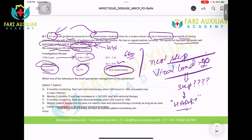The options include: six-monthly monitoring; start antiretroviral therapy when CD4 count is less than 350 and patient has a major infection; monitor three-monthly; start antiretroviral therapy when CD4 is less than 350; or start antiretroviral therapy as soon as possible. The answer is: start antiretroviral therapy as soon as possible. You don't wait for anything. If the patient has a positive viral load of more than 20 or more than 40, you start treatment immediately without consideration of CD4 count.